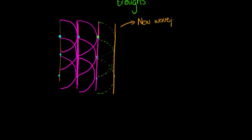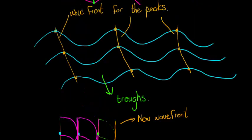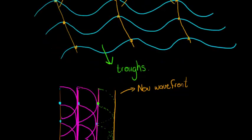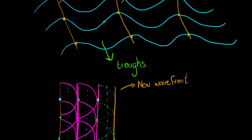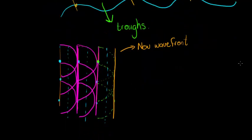That is our new wave front. Remember we said wave fronts are the imaginary line joining particles on the crest or peak — you could use troughs too. It can be any point as long as you're consistent. If this is the peak and we're in the middle of the peaks, there would also be a wave front for the troughs. And remember, whenever troughs and peaks align, we have destructive interference and no displacement.